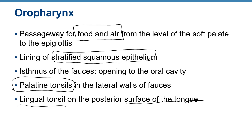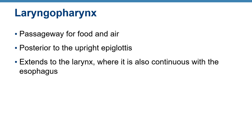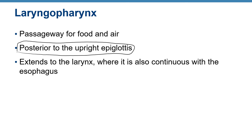On the surface of the tongue are lingual tonsils. Tonsils are part of the lymphatic system and protect against microorganisms — bacteria and viruses — entering the oral and nasal cavities. The laryngopharynx is posterior to the upright epiglottis and extends to the larynx, where it is continuous with the esophagus.